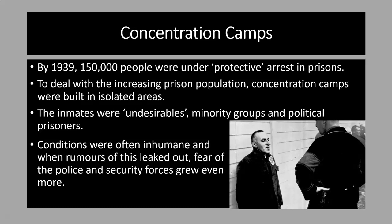Because of the massive increase in the prison population, concentration camps were created to house the inmates. The very first Nazi concentration camp opened at Dachau, a former army barracks outside Munich, in April 1933. The camps were deliberately located in isolated areas away from the public's gaze. Inmates included so-called undesirable groups such as prostitutes and homosexuals, minority groups such as Jews and Romany Gypsies, and political prisoners such as intellectuals, communists and trade unionists. At the bottom of the screen there is a picture of a German journalist who spoke out against the Nazi regime and was sent to a concentration camp not long after the Reichstag fire.